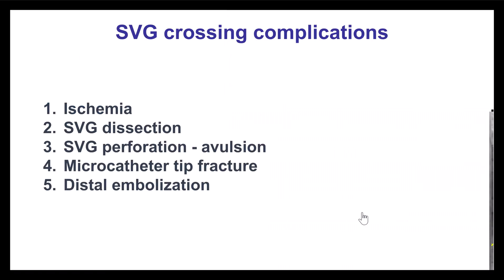Potential complications of crossing a vein graft for the retrograde approach include ischemia, dissection, and perforation that can lead to mediastinal effusion. There can also be fracture of the wire tip. One complication more specific to vein grafts is distal embolization, especially in recently occluded bypass grafts that may have a large amount of thrombus.